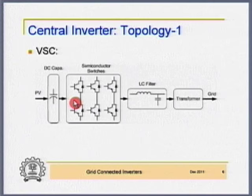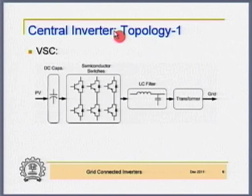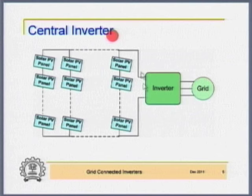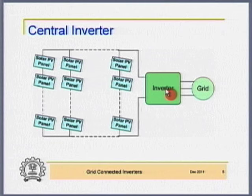The output power from the solar array is fed directly to the DC capacitor. The MPPT sets the reference DC link voltage. There is no DC-to-DC converter here — the solar panels are directly connected to the inverter and to the grid.